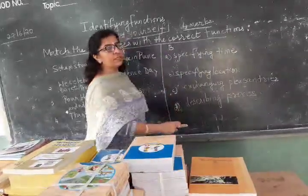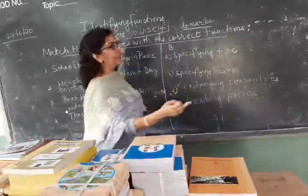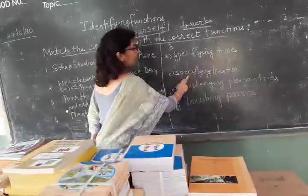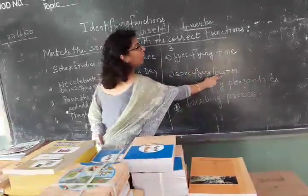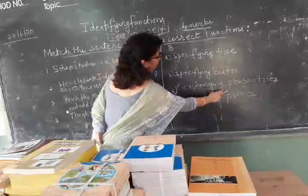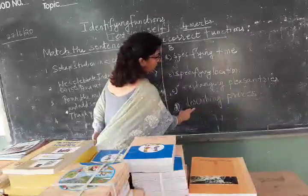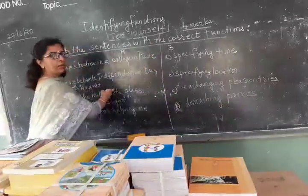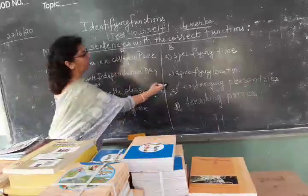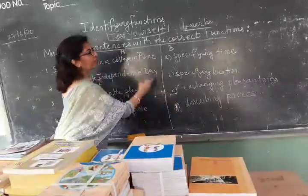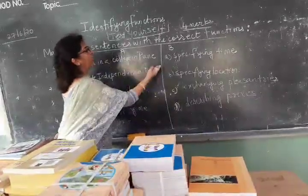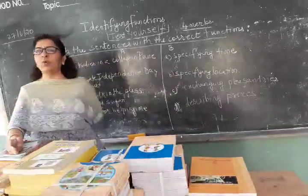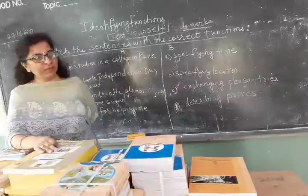The function expectancy — what are you going to apply? Specifying time. Specifying location. Describing process. These are 4 options. This is how you will have been put. You have to match the correct function, and we will have to score 4 out of 4 today.